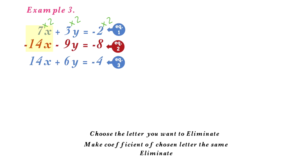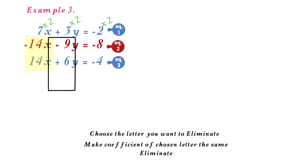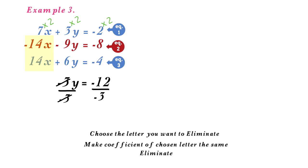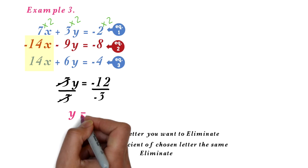The next step is to eliminate the x values using equation 2 and equation 3. Since one is positive and the other is negative, we add the two equations so that the x value will be 0. Negative 14x plus 14x equals 0. Negative 9y plus 6y equals negative 3y. Then negative 8 plus negative 4 equals negative 12. Now we have a simple equation: negative 3y equals negative 12. Dividing both sides by negative 3, y equals 4.